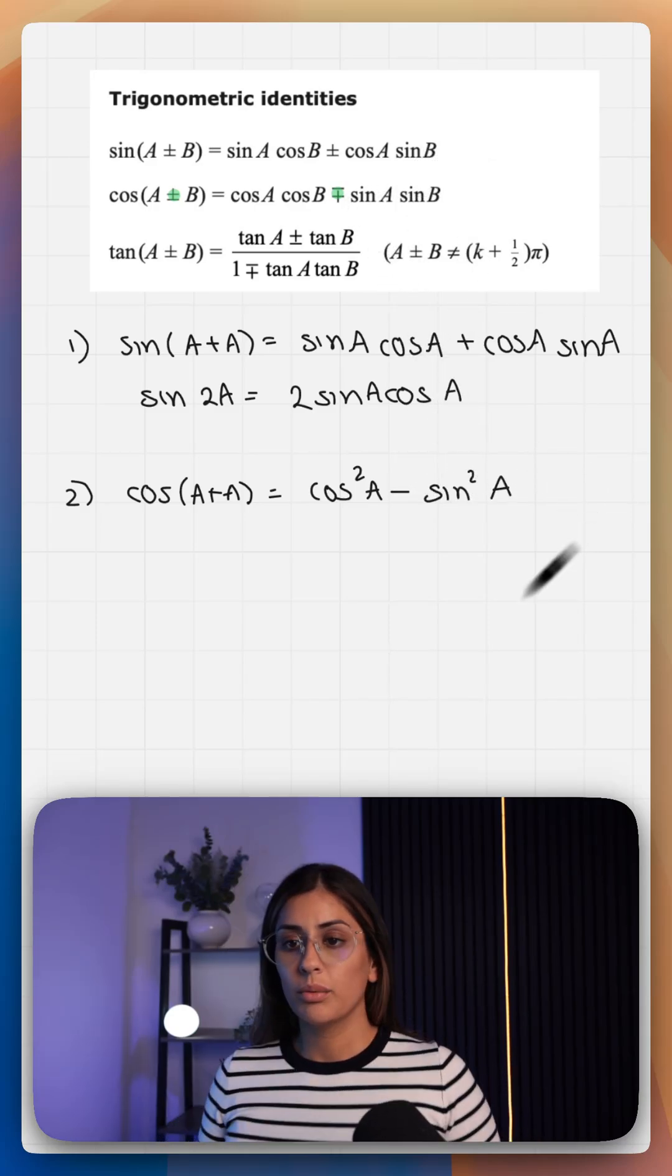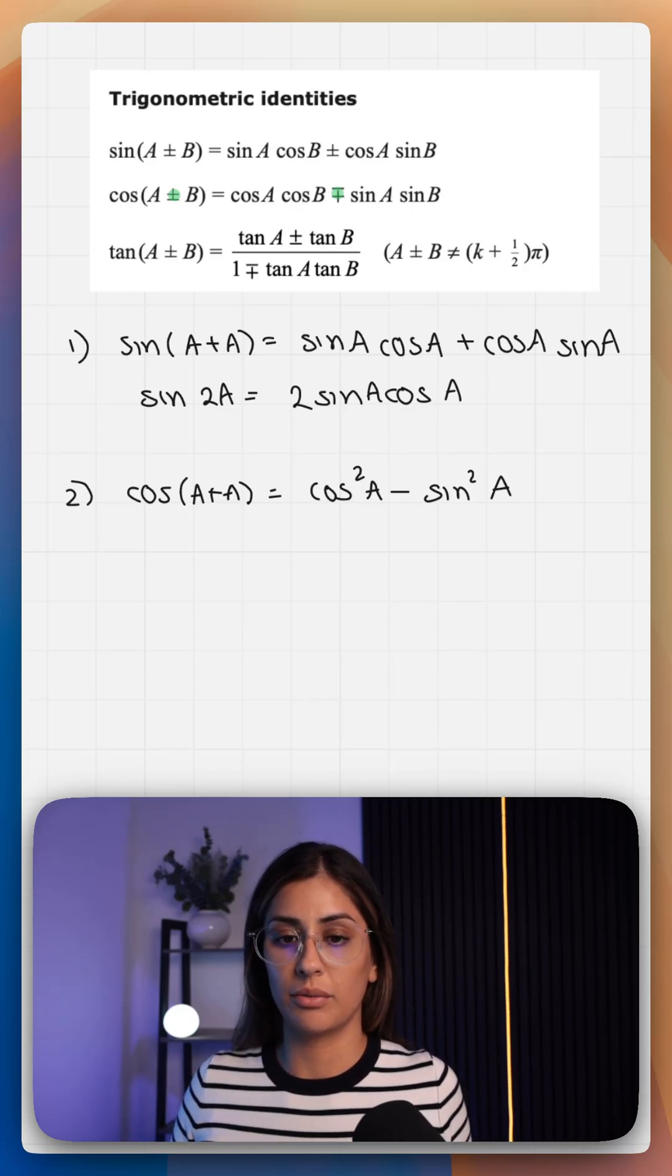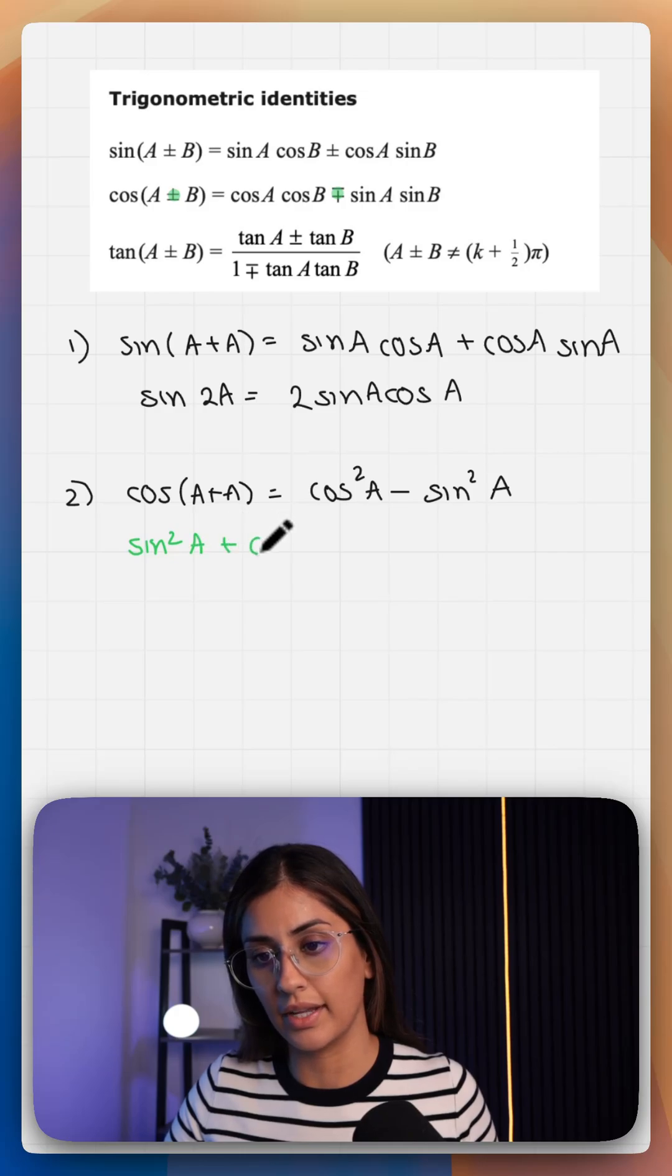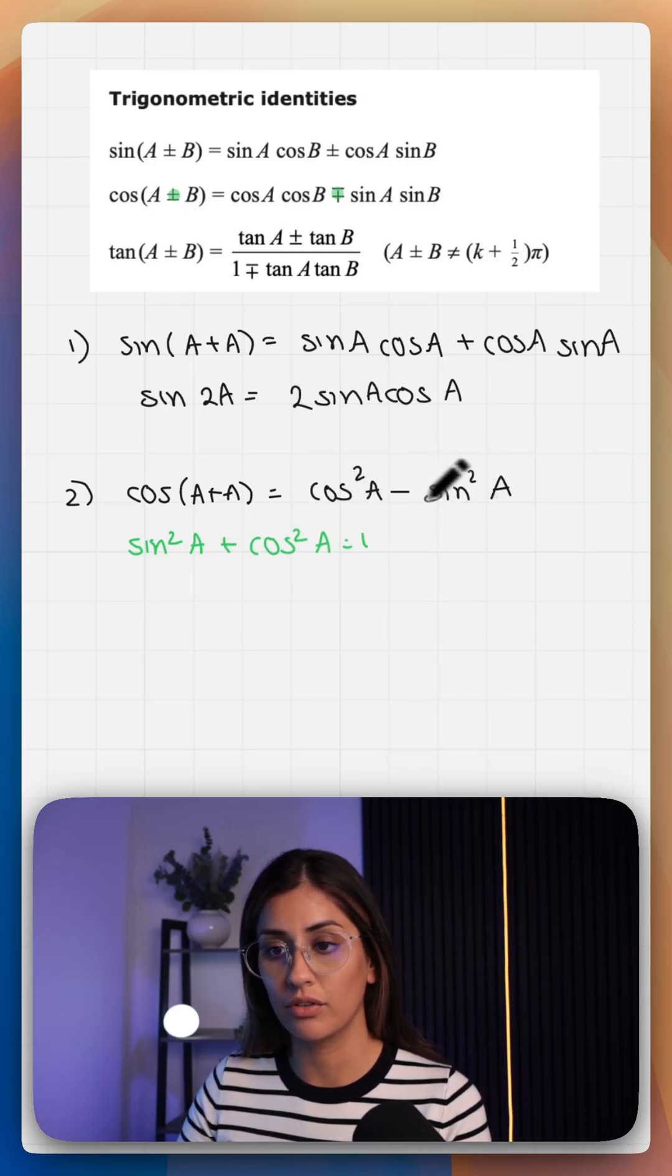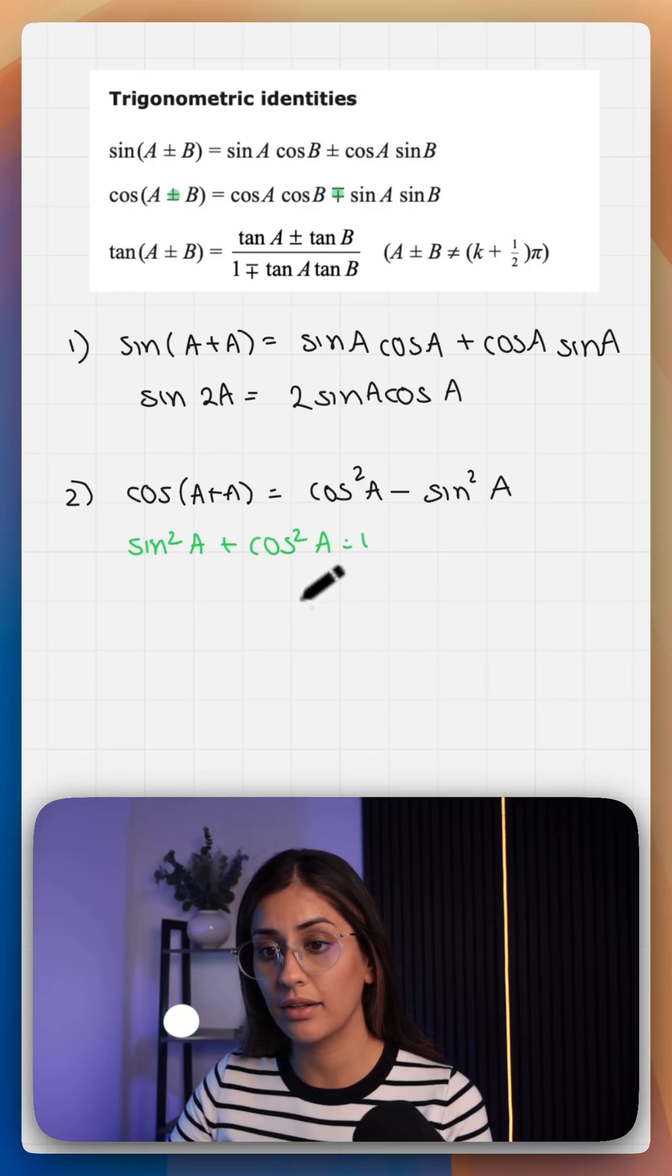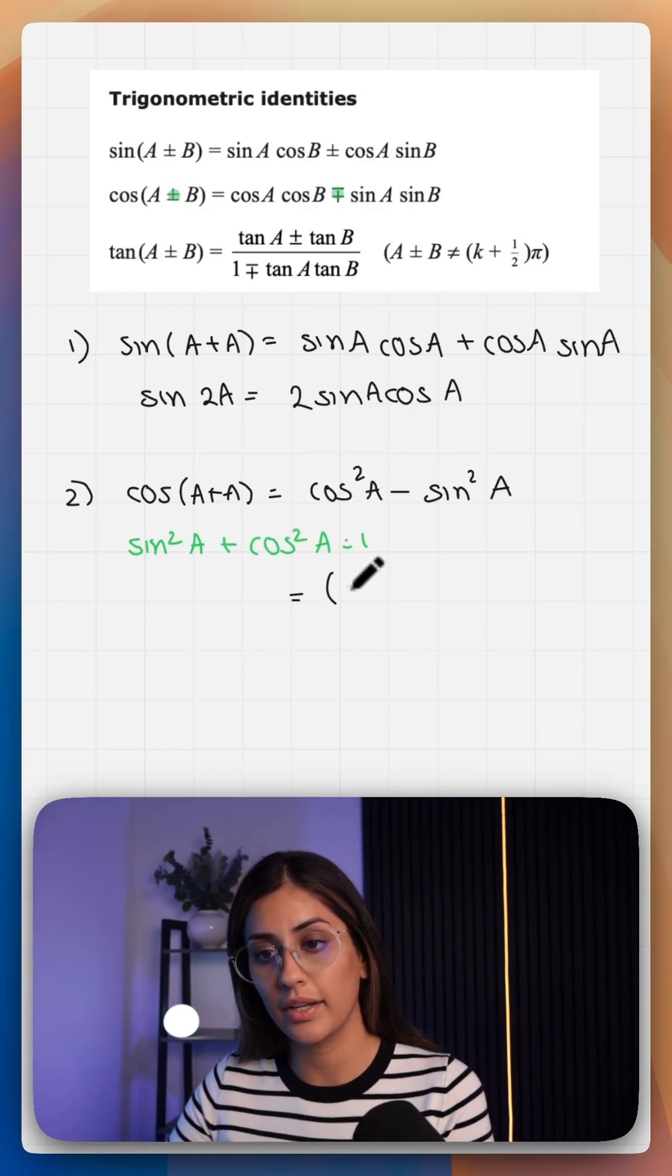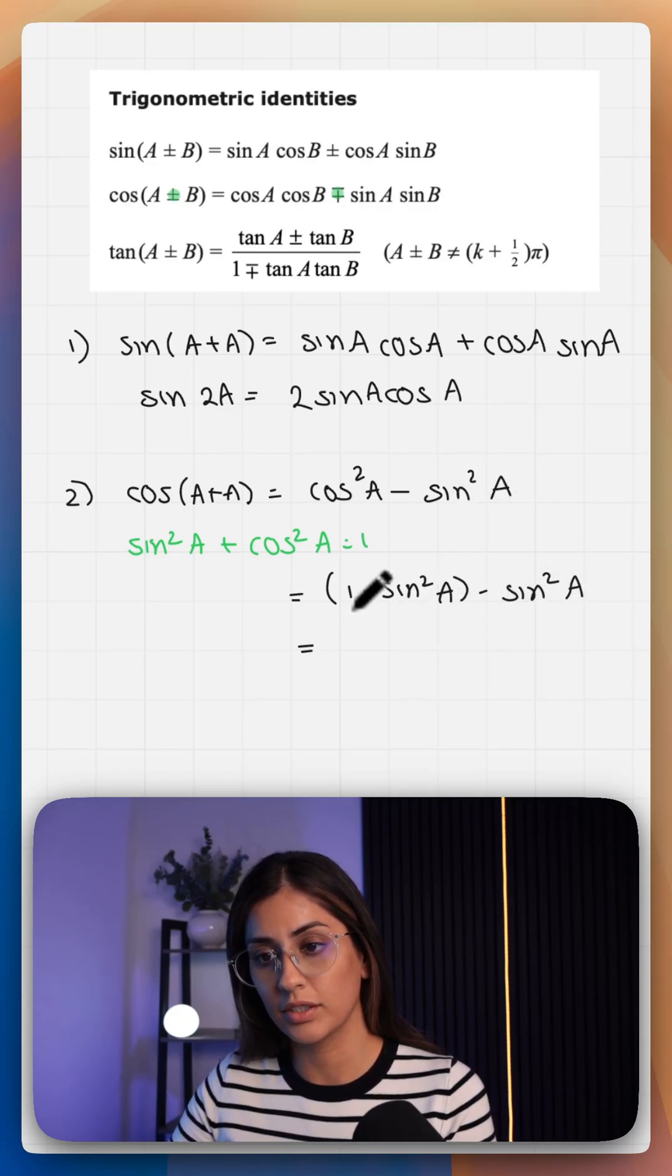We're going to use our Pythagorean identity from year one, which was sine squared a plus cos squared a equals one, to derive the other two versions of the cos double angle formula. Cos squared a could be written as one minus sine squared a, and we subtract that, and that gives us one minus two sine squared a.